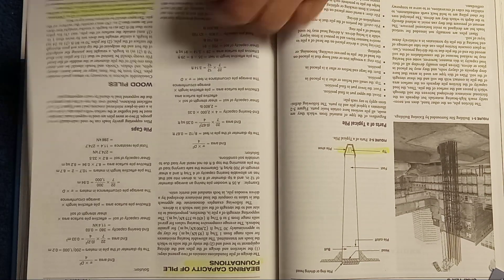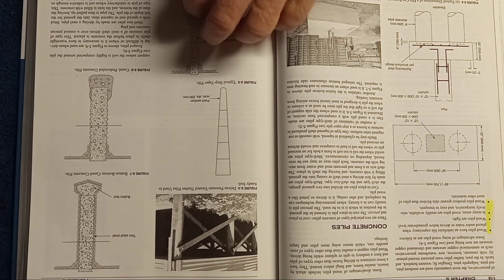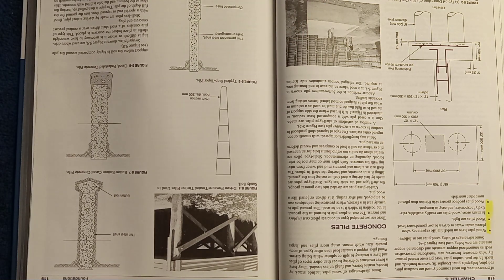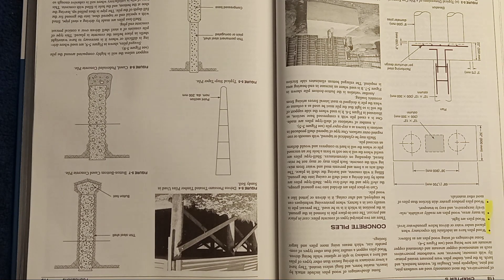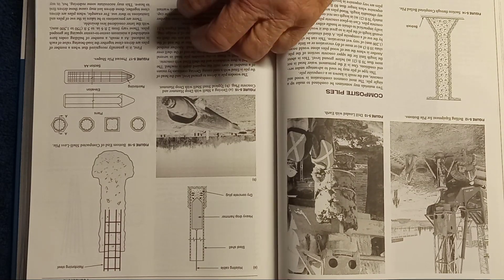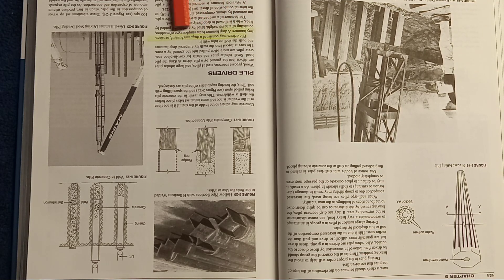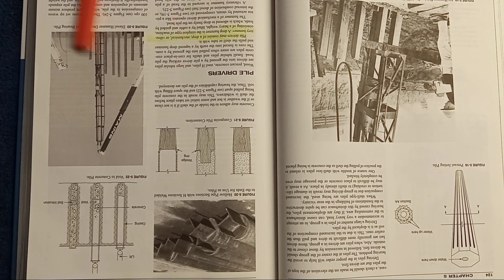Wood piles on page 117: they come in lengths of 12 inches, the minimum tip is about 6 inches, and they get up to about 20 inches in diameter on the butt. The advantage of wood piles: they're light — whoever wrote this hasn't actually tried to pick up a wood pile, but in comparison they are light. Concrete and steel piles could be much heavier. To drive that pile you can have a drop hammer, a mechanical hammer, or a vibratory hammer.